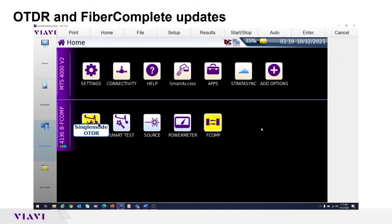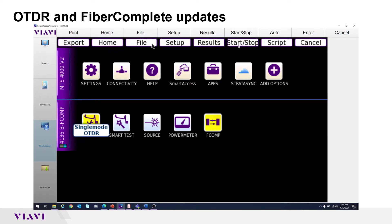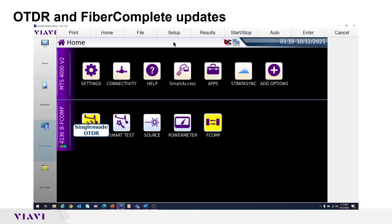This video is specific to the TBIRD 4000 for both OTDR and Fiber Complete. Note on the home page to turn an instrument off, the cancel button must be used. There is no cancel button on the TBIRD 4000, so at the top of the screen, touch the screen and virtual hard keys will appear for a couple of seconds. Tap the top, hit cancel, and whichever instrument is highlighted will be shut off.